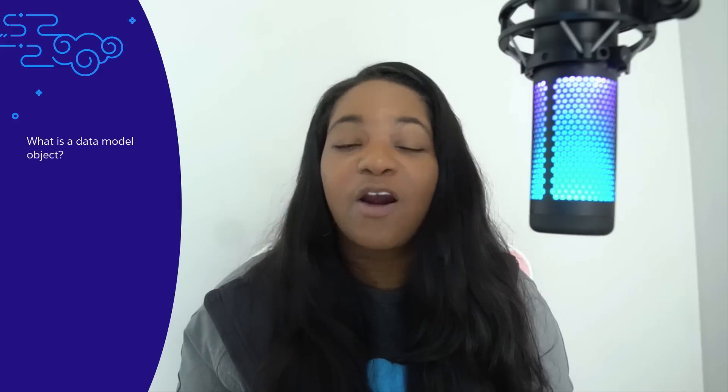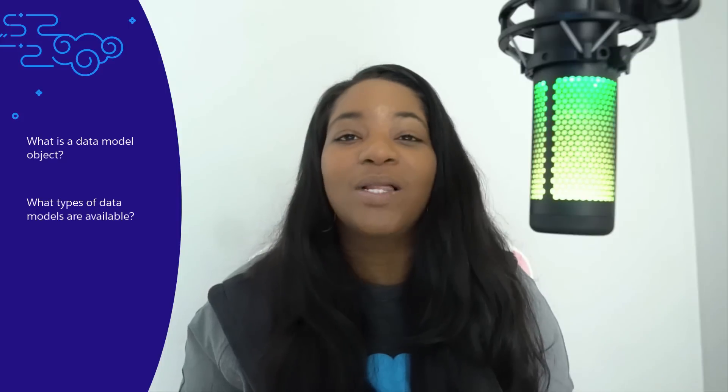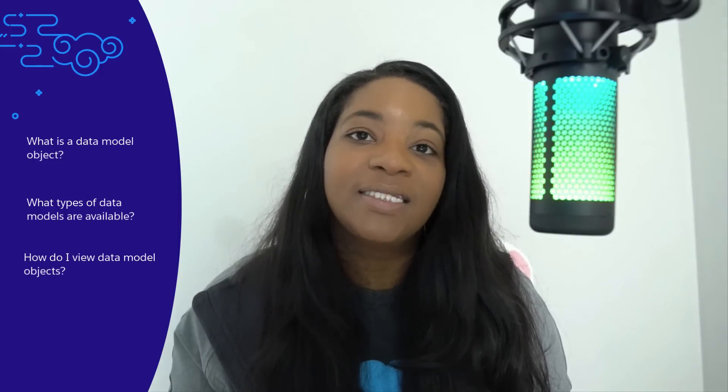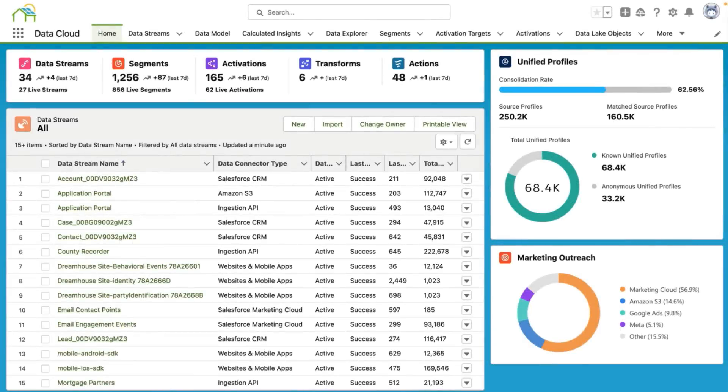The first thing that we're going to cover is what a data model object is and what it's used for. The second thing we're going to cover are the different types of data model objects that are available out of the box, as well as how to map your data lake object to a data model object. And finally, we're going to show you how to look at data model objects in data cloud so you can see where the data is actually sitting in the fields in your mapped data model objects. Okay, let's get started.